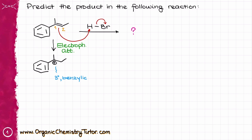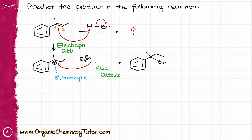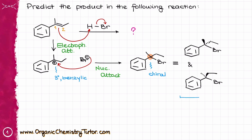The next step is the nucleophilic attack by Br⁻. If I take my Br⁻ and attack my carbocation, I'm going to make a product that looks like this. Something very important about this product: this atom is a chiral atom, which means in reality I'm going to form a mixture of two different molecules. The stereochemical relationship between these two molecules is enantiomers. I can double check by assigning R and S stereodescriptors — the molecule on top has the S descriptor and the molecule on the bottom has the R descriptor. So these two molecules are enantiomers — non-superimposable mirror images of each other.